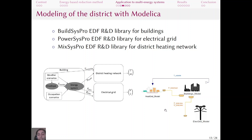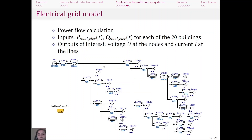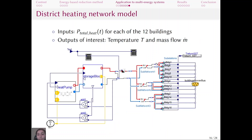Here we can see the model in Dymola. The buildings model is composed of 20 buildings, each with one envelope and one energy system. Weather and occupation scenarios are the inputs. The outputs feed the electrical grid model and the district heating network model. In the electrical grid model, we have power flow calculations; the active and reactive power demands are inputs, and we are interested in voltages at nodes and currents at lines. In the district heating network model, 12 buildings are divided into three sub-networks, each taking heating demand as input, and we are interested in temperature and mass flow at the substation level of each building.